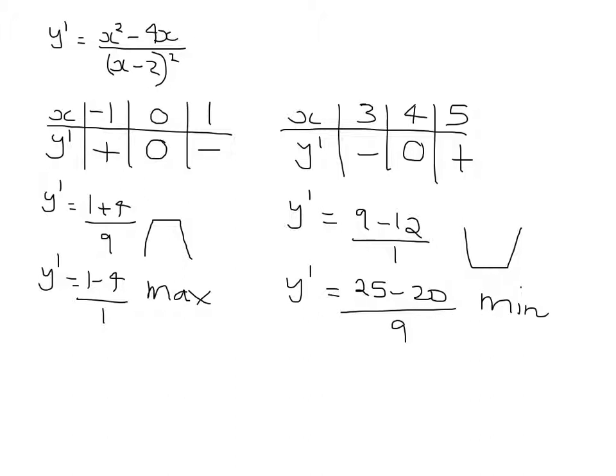So if I rewrite the original curve, that's y equals x squared over x minus 2. Now, let's look at the asymptotes. If x equals 2, the denominator equals 0. So we know x can't be 2. It's a vertical asymptote.